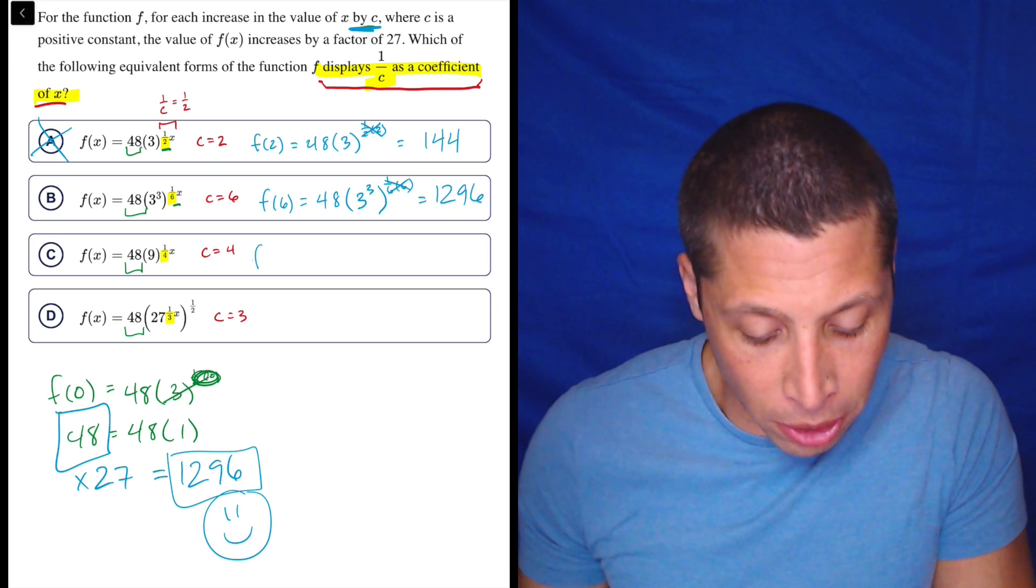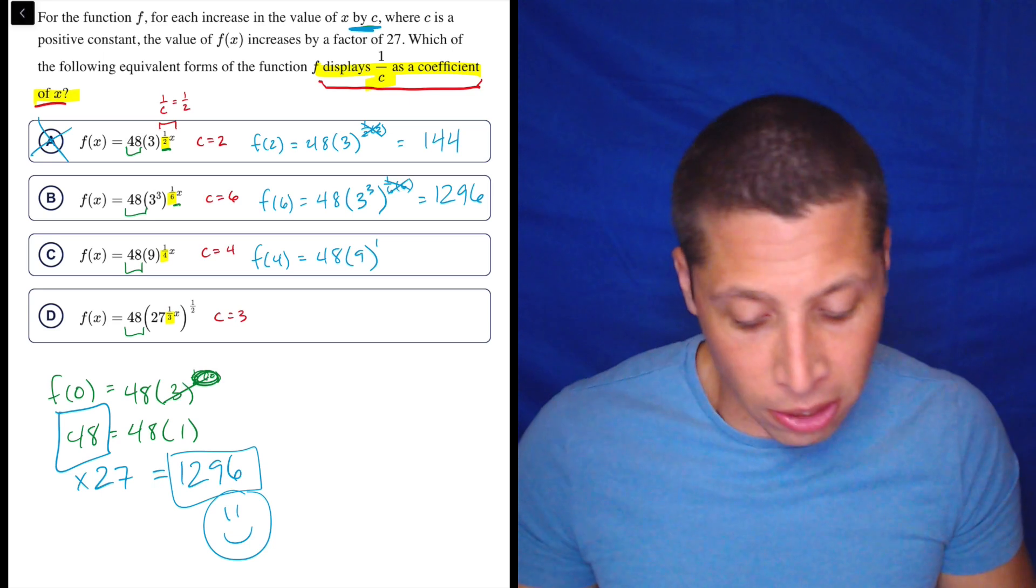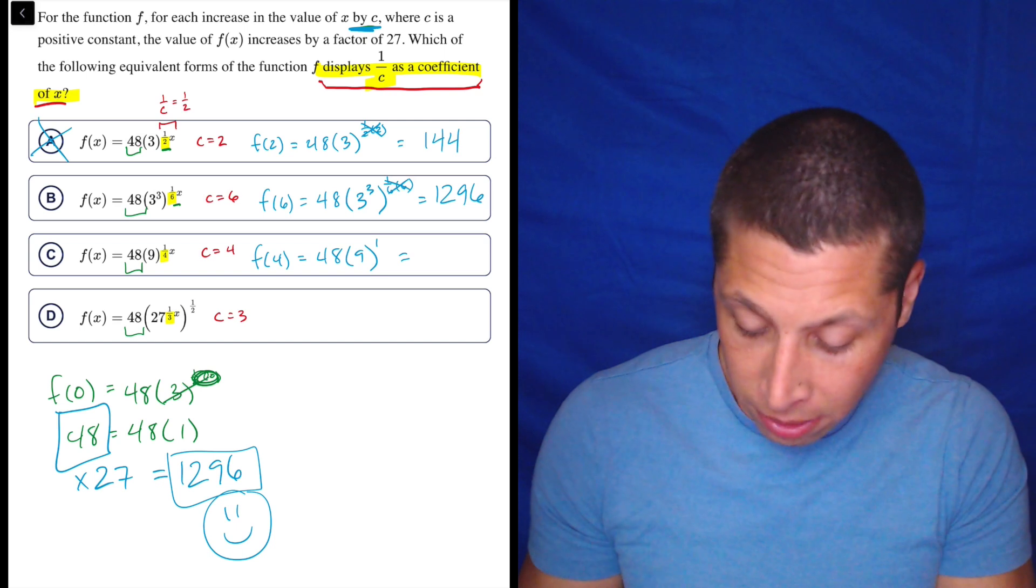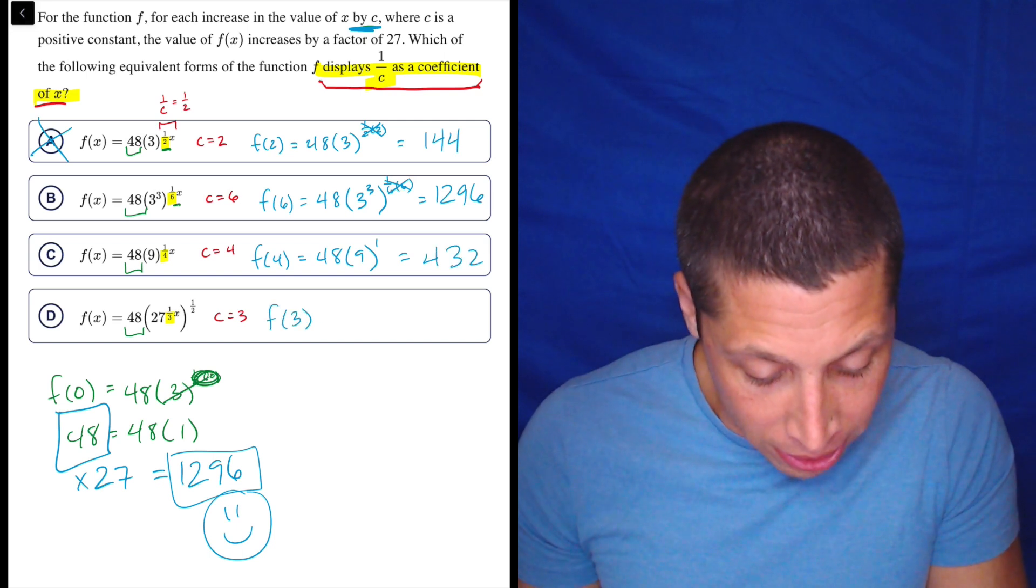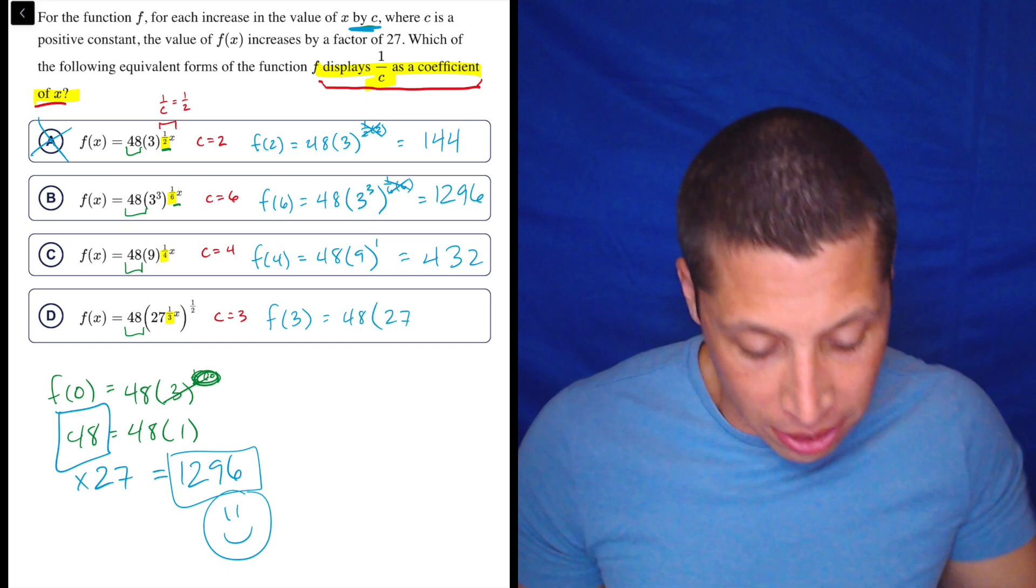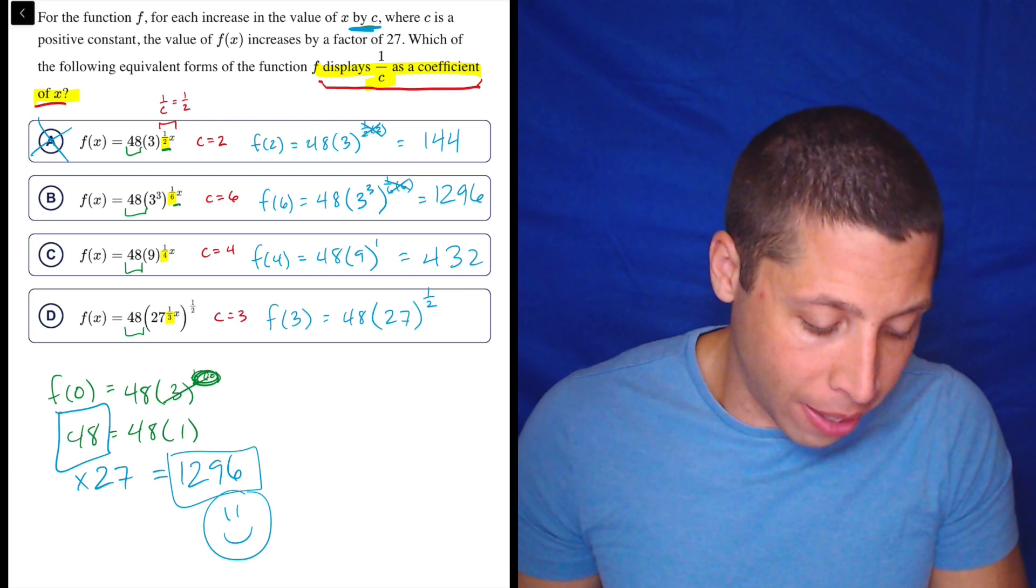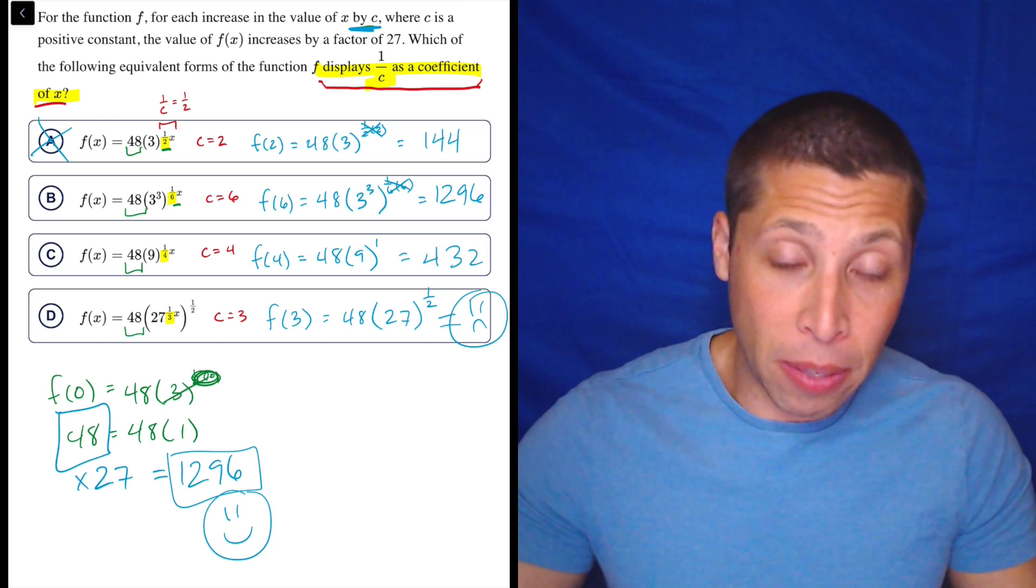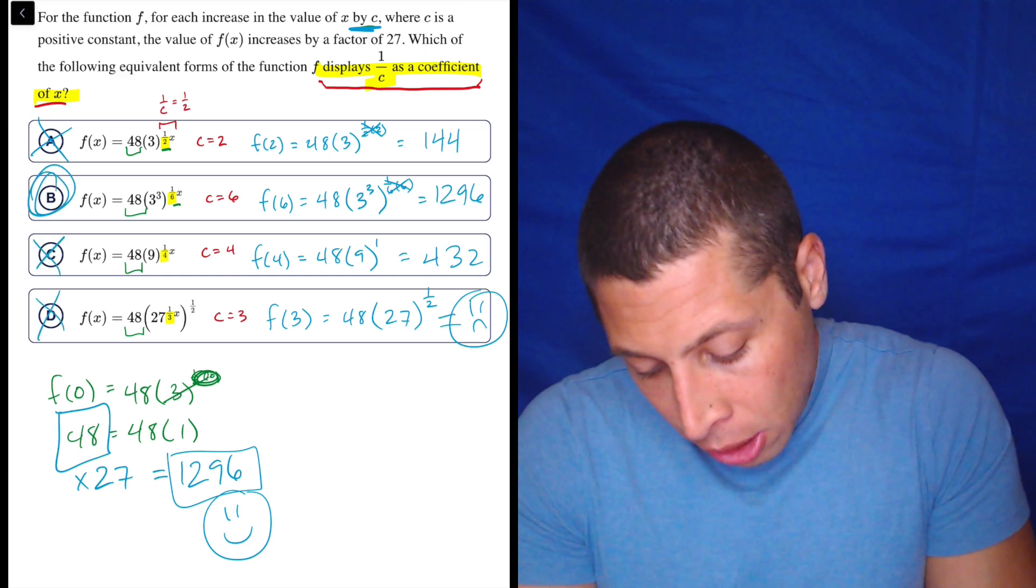Let's double check, let's look at everything else. So here we're going to do f(4), and we're going to have 48 times 9 to the first, because the fraction is going to cancel. So 48 times 9 is not 1296, it's 432. And this one is going to be f(3), so 48 times 27 to the 1/3 times 3 is going to be just 27 to the 1st and then to the 1/2. It's going to be messy. It's going to be the square root of 27 that we're multiplying by, not 27 itself. So that proves choice B.